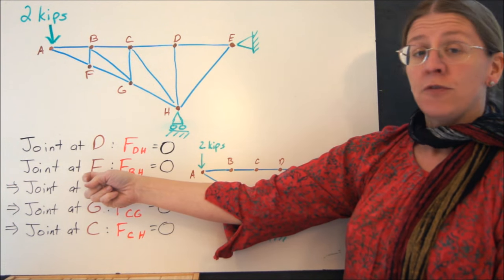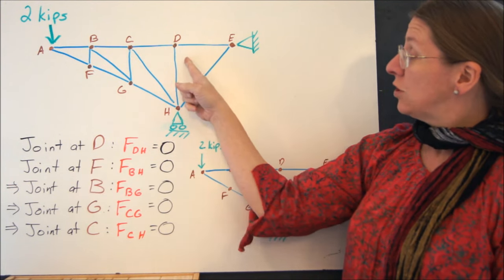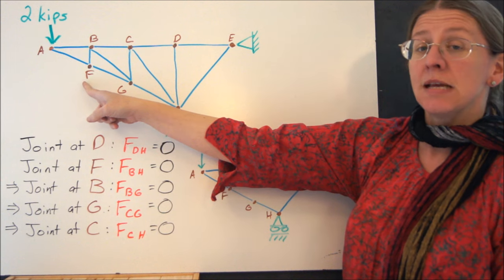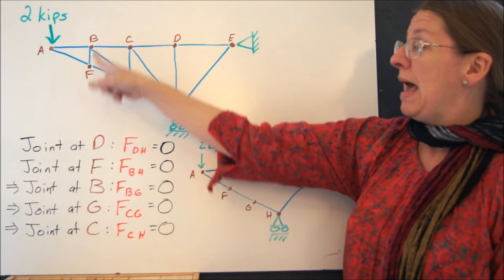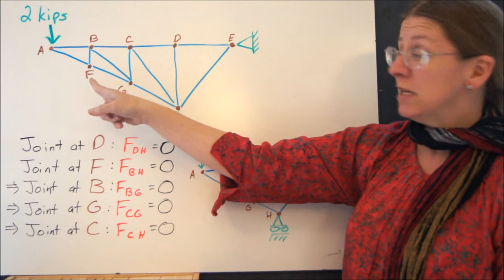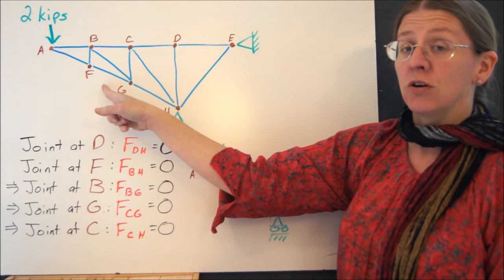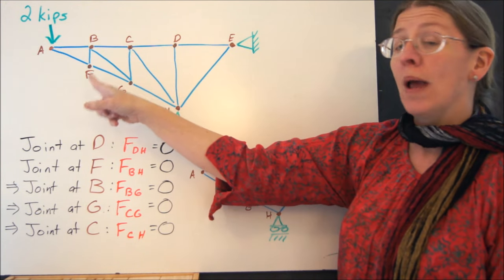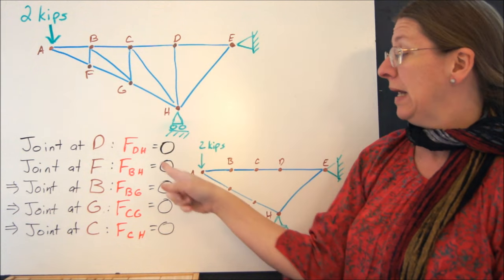And the joint at F, once you look at this, you can come over here and it's the same situation. The joint at F tells you that BF must be zero, because AF and FG are collinear. And there are no external loads happening at F.